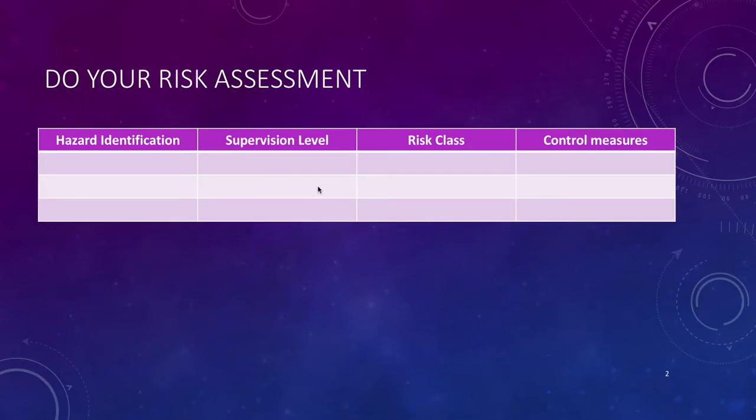Don't forget to do your risk assessment. Identify the hazards, decide what kind of supervision level you need, what's the class of risk - high, low, medium - and then what control measures are you going to put in place to try and mitigate those risks.